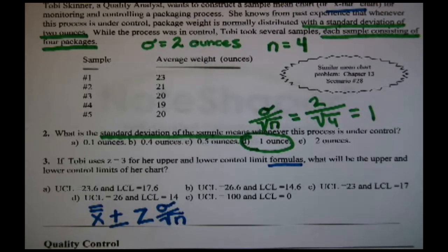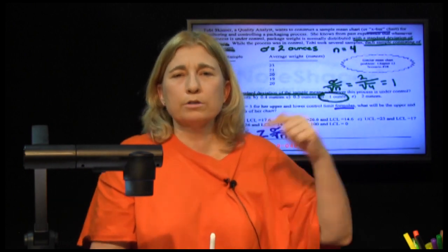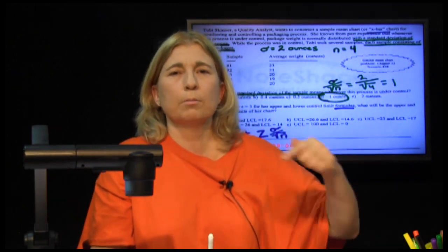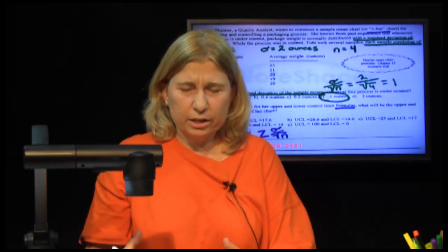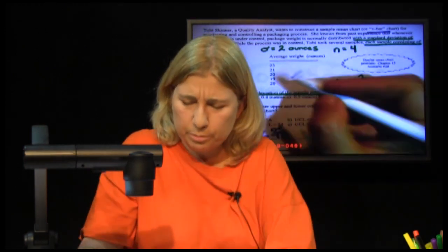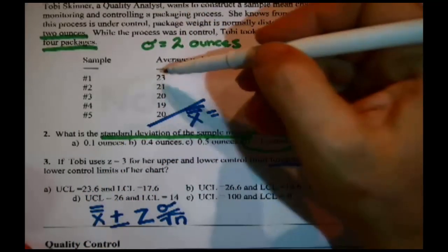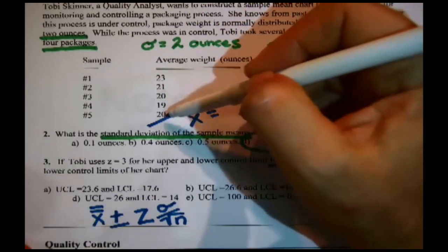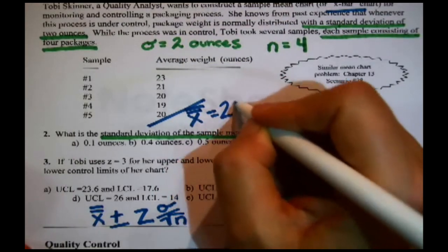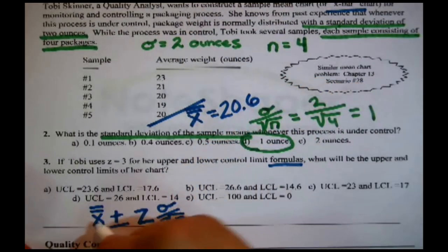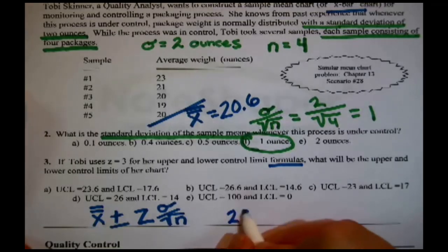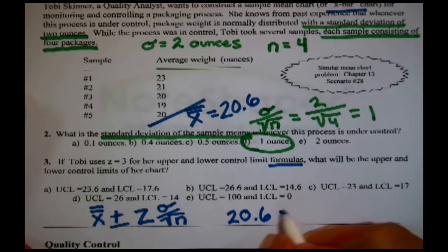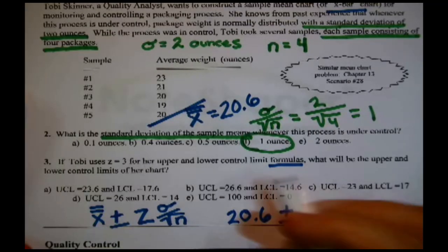Now wait a minute, X double bar. What is X double bar? X bar is always mean, always average, so X double bar is average of the averages. We sort of in a certain way, if we were making a control chart, skipped a step here. She got all these averages from these samples. We need to average the averages, X double bar. We need to average these numbers, 23, 21, 20, 19, and 20. I did, I get 20.6. That's the number we need for here.